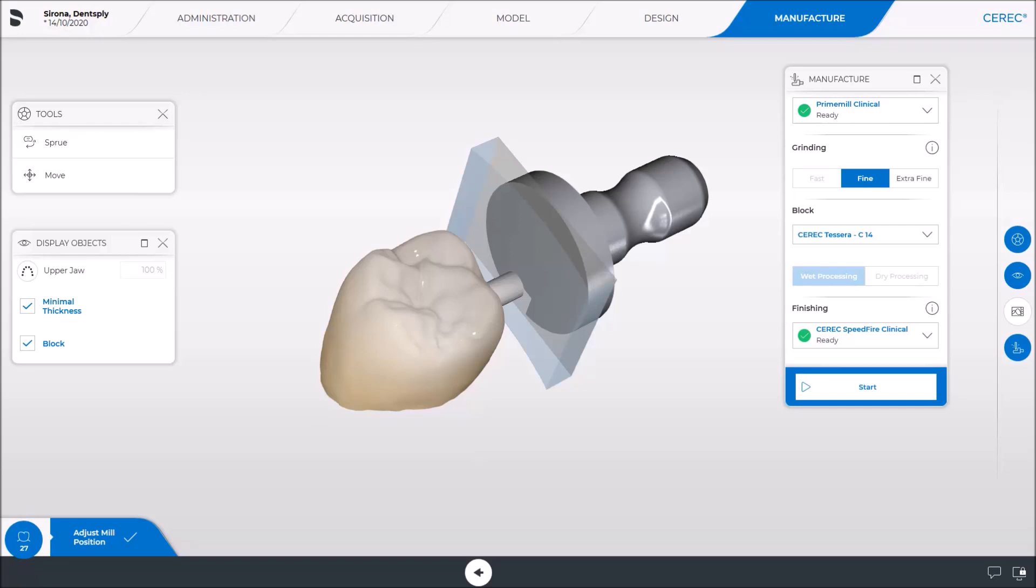Earlier, a scan was already performed, the restoration designed and positioned inside the block. Additionally, the devices needed for the manufacturing, CEREC PrimeMill and CEREC Speedfire, were already selected from the drop-down menus. The green check marks indicate that CEREC Speedfire is turned on and selected.